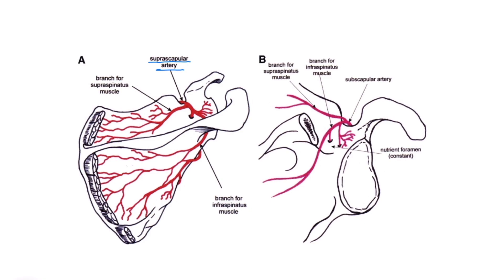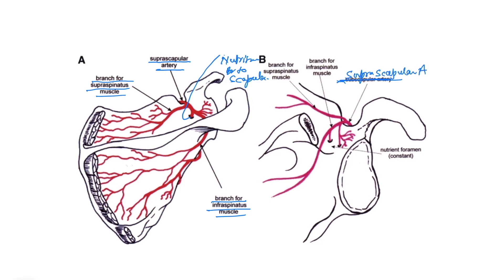In this image you can see the suprascapular artery winding above the suprascapular ligament (not shown here), then passing down into the supraspinous fossa where it gives a branch to the supraspinatus muscle and a nutritional branch to the scapula. It then winds below the spinoglenoid ligament to supply branches to the infraspinatus muscle. Note: the label in this image incorrectly reads 'subscapular artery' — it should be suprascapular artery.